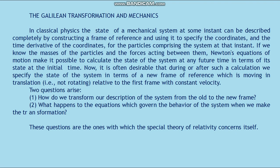It is often desirable that during or after such a calculation we specify the state of the system in terms of a new frame of reference which is moving in translation — it is not rotating — relative to the first frame with constant velocity. Two questions arise. First: how do we transform our description of the system to the new frame? Second: what happens to the equations which govern the behavior of the system when we make the transformation? These equations are the ones with which the Special Theory of Relativity concerns itself.